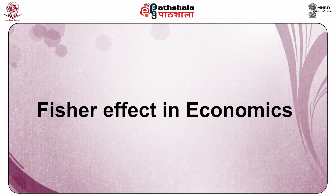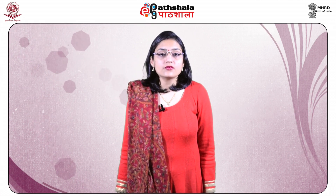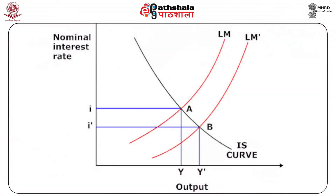We will now discuss the Fisher effect in economics. To understand it, we take the case of an increase in nominal money stock. In the short run, the increase in nominal money is not matched by an equal increase in price level, and therefore it leads to an increase in the real stock of money. An increase in the real money stock shifts the LM curve down from LM to LM dash. The economy moves down the IS curve and the equilibrium moves from A to B — output is higher, the nominal interest rate is lower and, given expected inflation, even the real interest rate is lower.